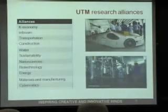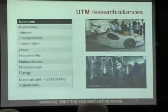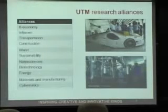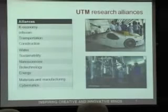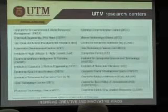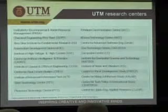In terms of research, we have what we call Research Alliances, or RA — and RA here stands not for research assistant but research alliances. We have 11 alliances: K-Economy, Infocom, Transportation, Construction, Water, Sustainability, Nanoscience, and Biotechnology. Under the research alliances we have research centers, which number 32 at the moment.